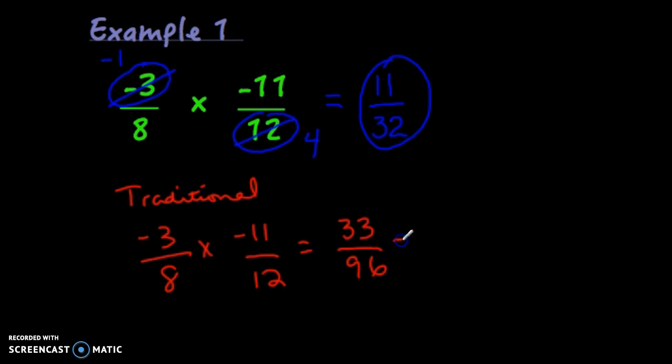And then I'm going to reduce 33 over 96. So you're going to look for a common factor that goes into 33 and 96. And it's 3, just like we reduced by 3 earlier. Here we could reduce by 3 at the end. 33 divided by 3 is 11. 96 divided by 3 is 32. And we still get the same answer of 11 over 32. So you'll pick which method you like better, though I will show the cross-canceling method most of the time.